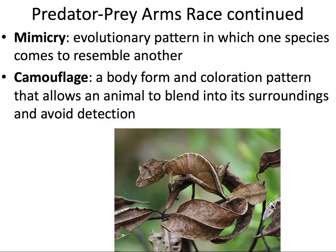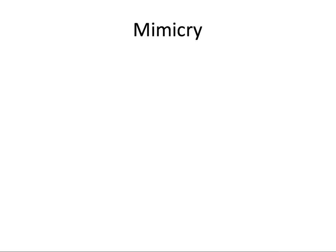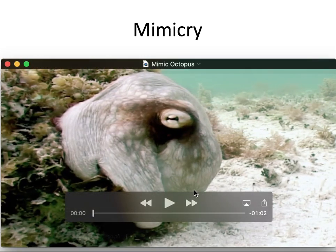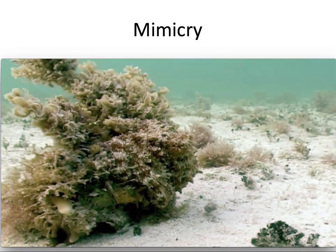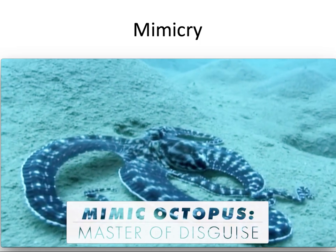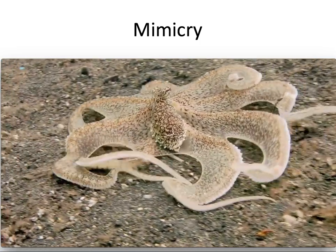Other evolutionary adaptations that prey have include mimicry and camouflage. Mimicry is a pattern in which one species resembles another, often one that is more dangerous. Camouflage is a body form or coloration pattern that allows an animal to blend into its surroundings and avoid detection. In this picture, it's more than just leaves — there's an organism hiding right here. Now we're going to look at the mimic octopus, which is actually really good at camouflage — it can blend in with its surroundings. But it is called the mimic octopus for a reason.